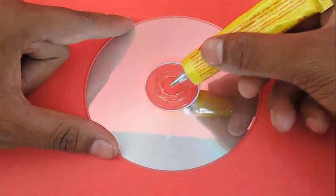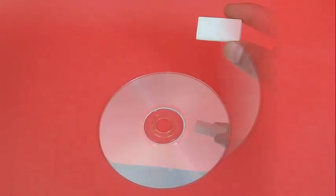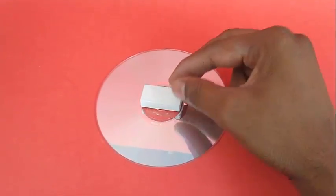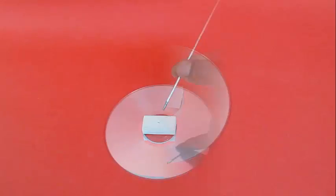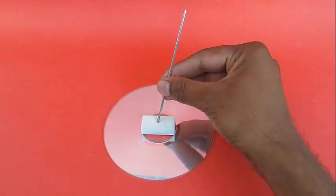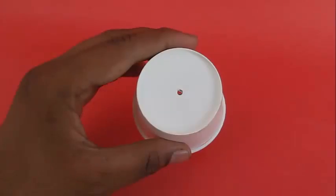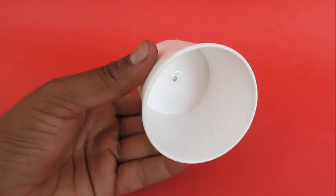First, take this CD and put the rubber foam on top of it. Stick it with the glue. Make a hole in the middle of this foam and stick a cycle spoke in the hole.